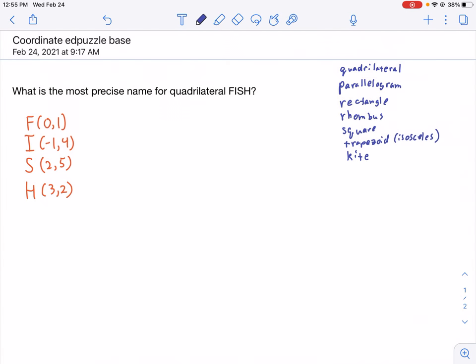All right. So, here's an interactive example of how to use coordinate geometry to identify a quadrilateral.